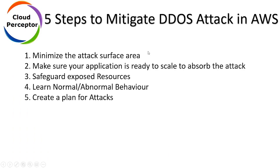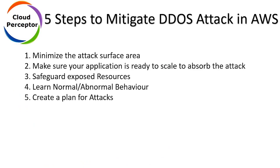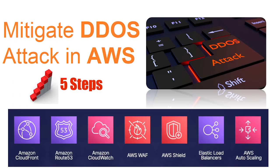These are the five steps to mitigate DDoS attacks in AWS. First, minimize the attack surface area — these AWS services help you minimize that surface area. Second, make sure your application is ready to scale to absorb the attack. You should make sure that auto scaling is configured and load balancers are in place, so if a hacker is sending too many requests, your infrastructure can absorb it.